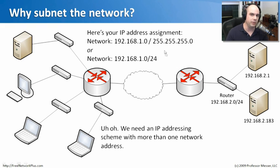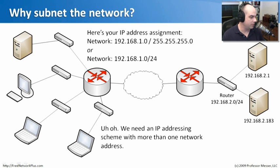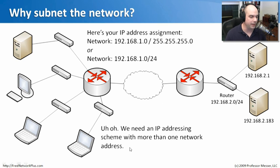They may just give it to you in an email and say: here's your network number, it's 1.0 slash 24. The problem is that we have one network, two networks, three networks, four networks here, and they've given us one IP address with one subnet mask. That's a problem, because we need an IP addressing scheme that allows us to use more than one network address. We're going to have to take what they've given us and split it up into smaller pieces — we're going to have to subnet our network.